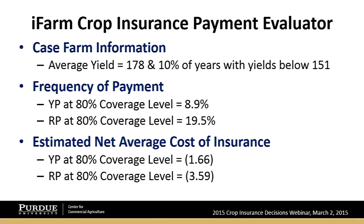One of the big reasons we're encouraging higher coverage levels is to protect your operation's working capital — making sure that in January 2016, your farm still has a strong working capital position. That $70 difference in revenue guarantees between 75% and 85% may not sound like much, but come next fall it could make a world of difference in preserving working capital. That's what we really mean by buying insurance as insurance.